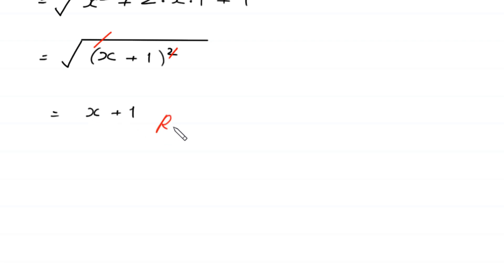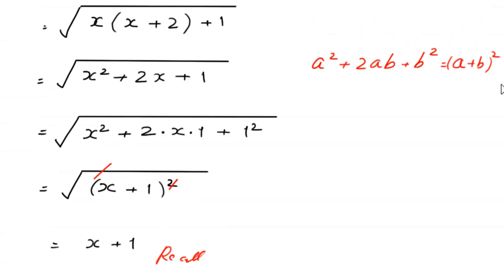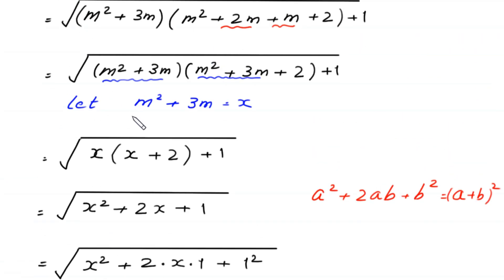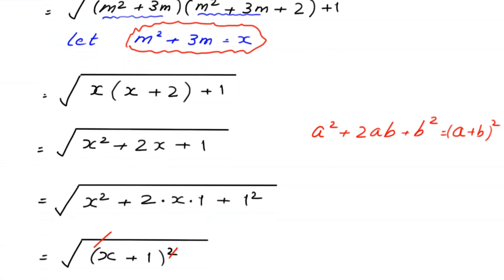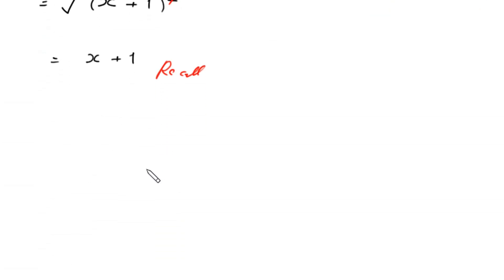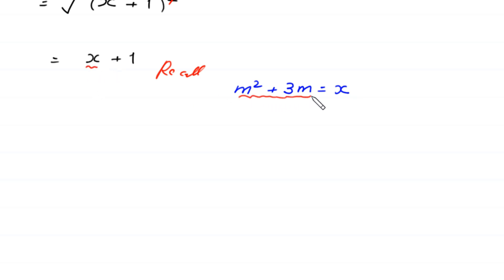Now recall that we supposed m squared plus 3m is equal to x. So we replace x with m squared plus 3m, and this expression becomes m squared plus 3m plus 1.